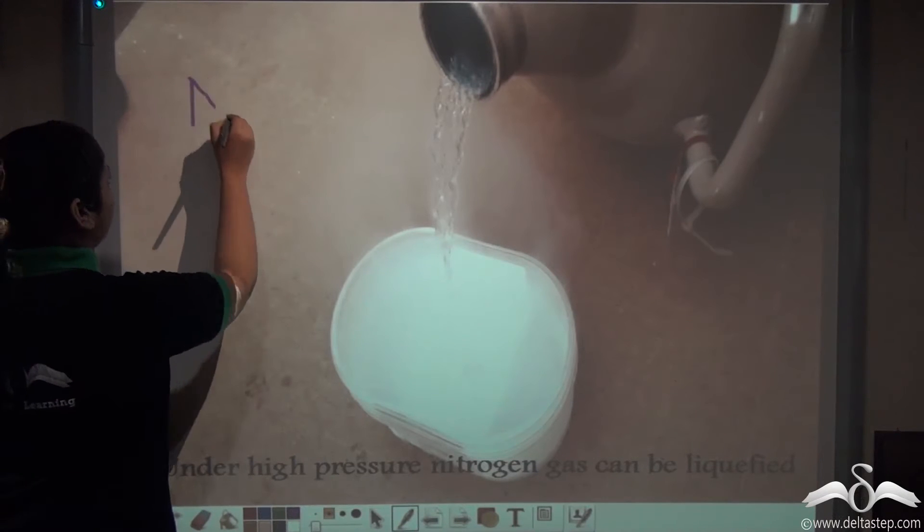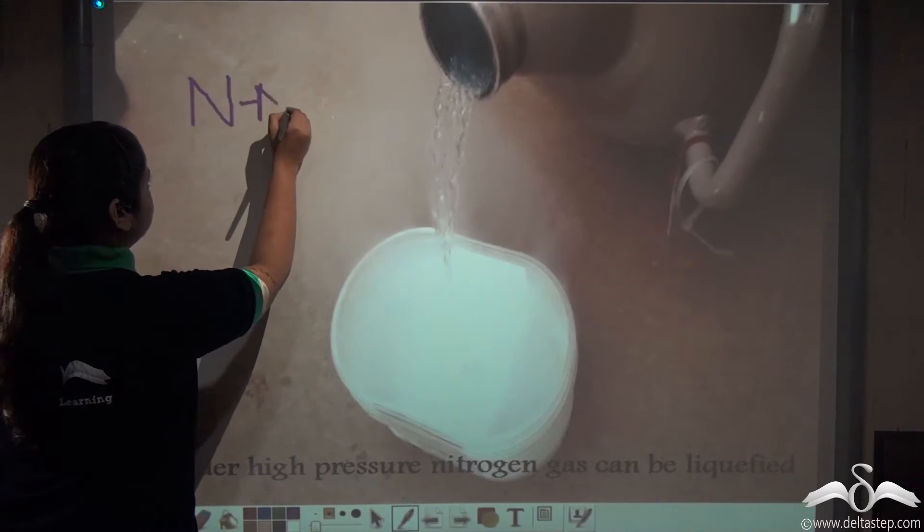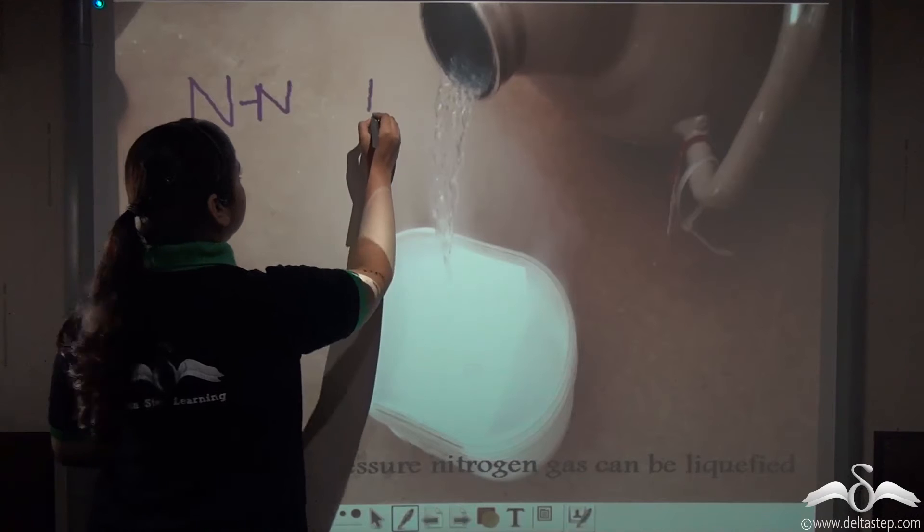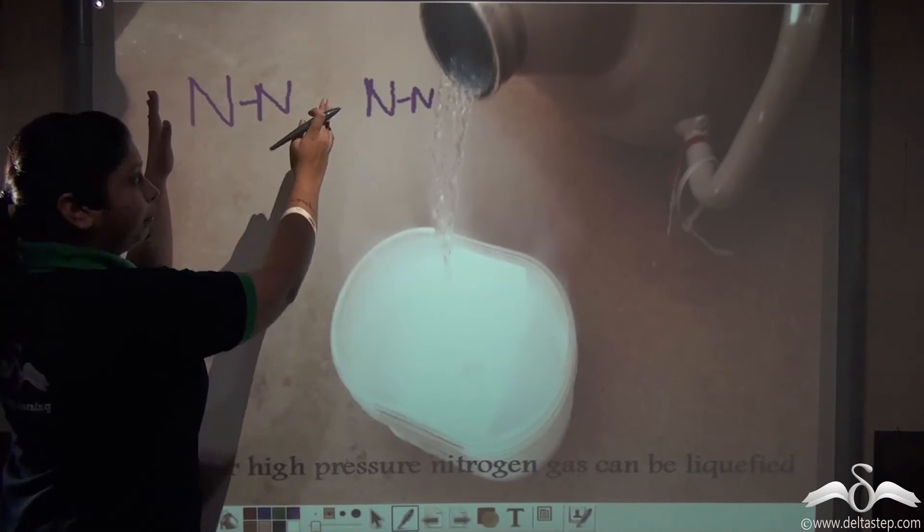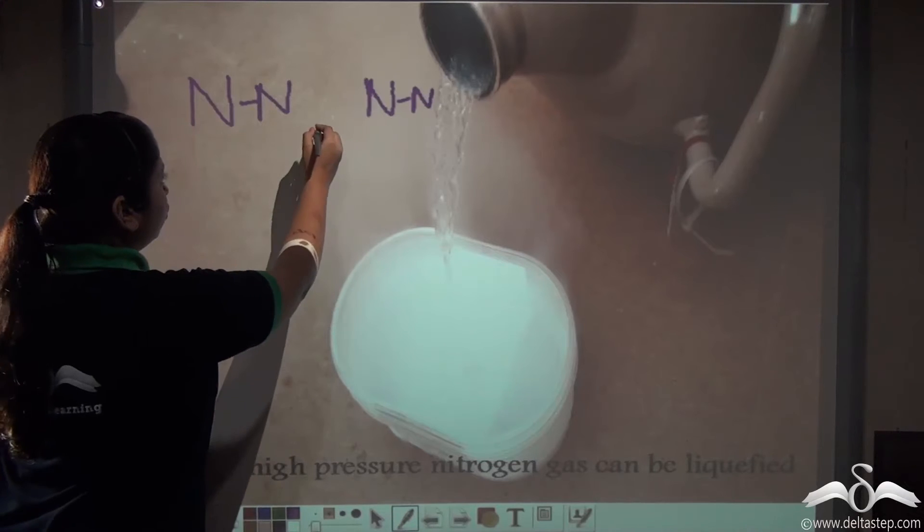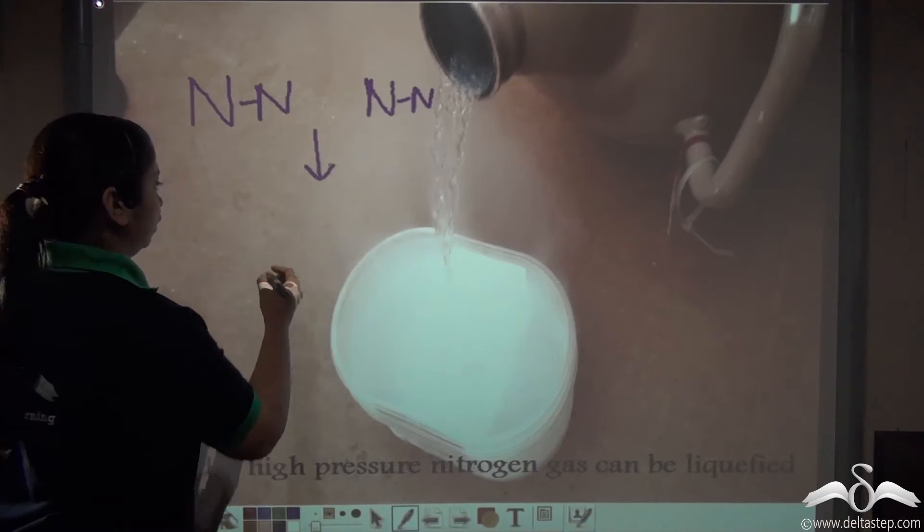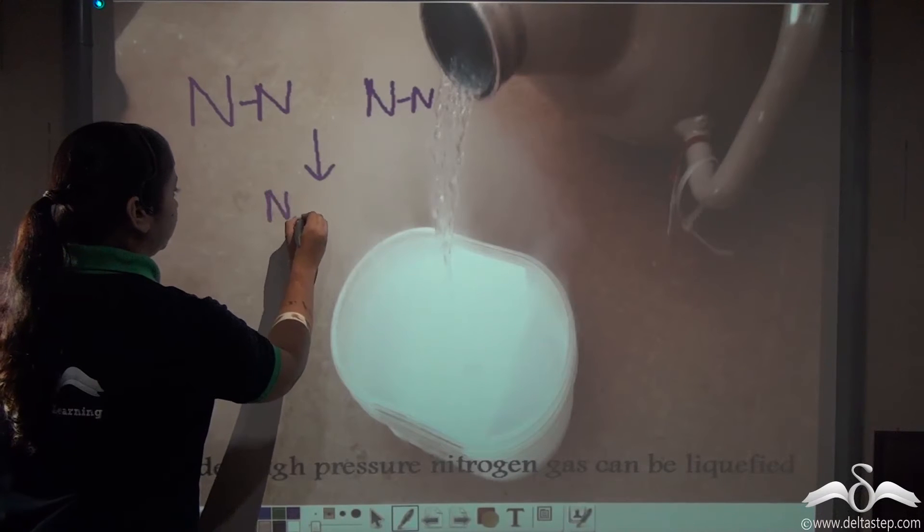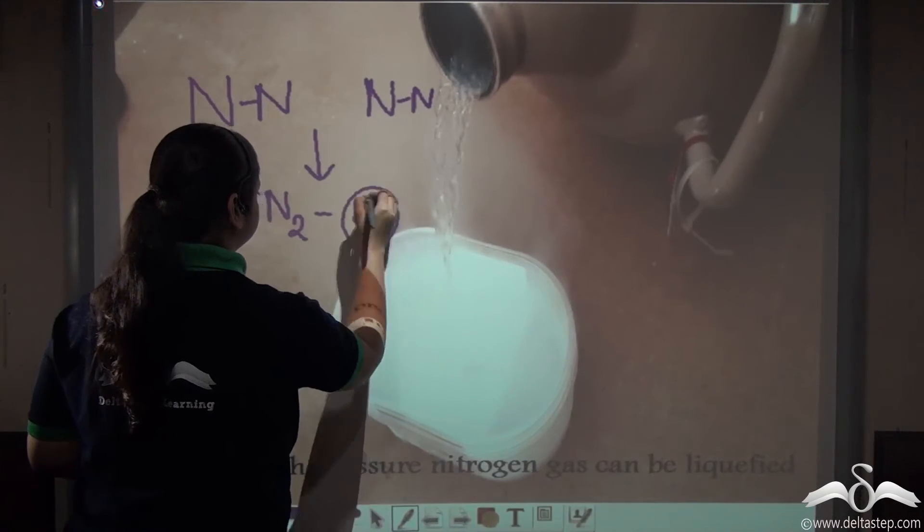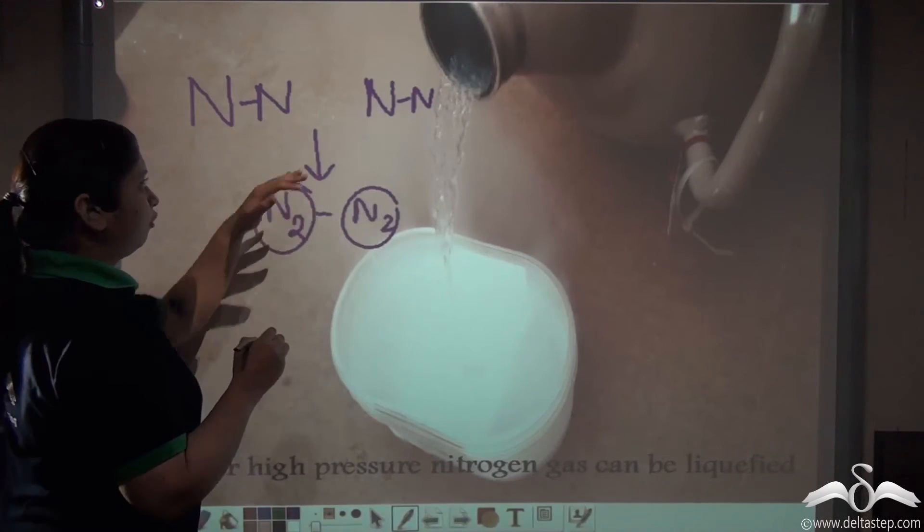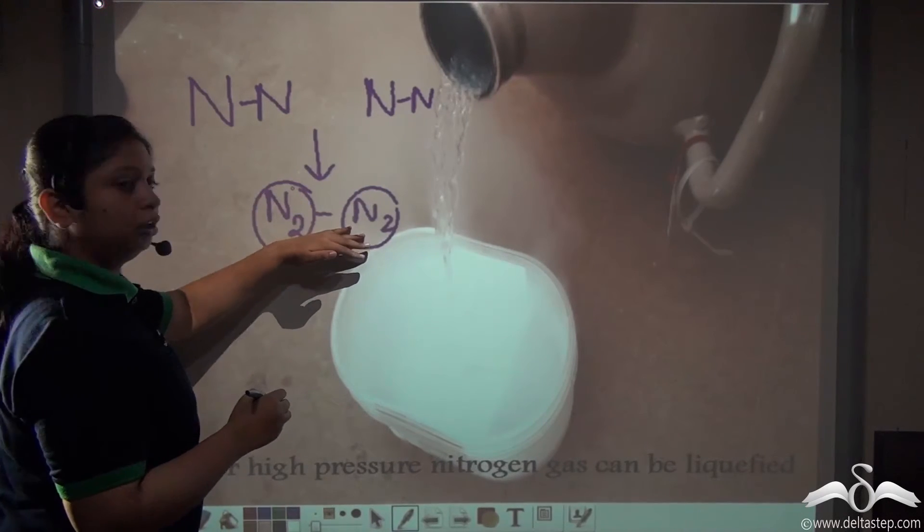If we have the nitrogen gas as N2, another nitrogen gaseous molecule as N2 is this much apart. So when you cool down the temperature or increase the pressure, these gaseous molecules come very close to each other. Thus from a gaseous state, they turn to liquid form.